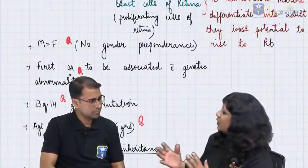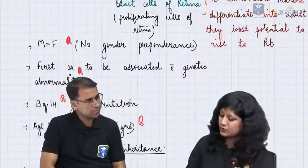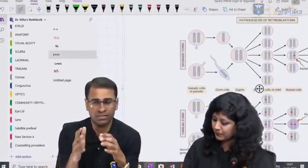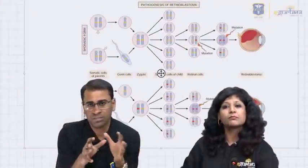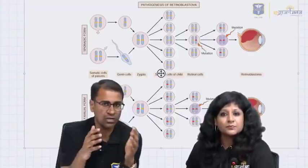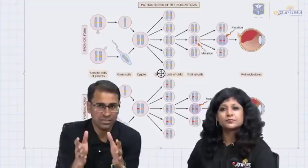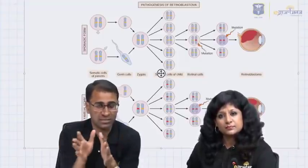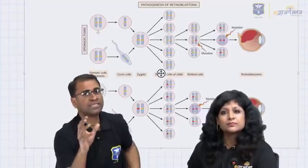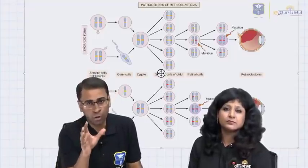Retinoblastoma comes from retinoblasts. The previous concept was that retinoblasts can differentiate into both neuronal and glial cell layers. The updated concept says it originates from retinal progenitors — cells that can give rise to neurons. Therefore, retinoblastoma is called a primitive neuroectodermal tumor, or PNET.